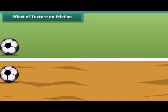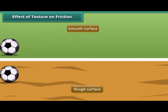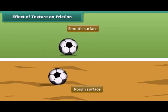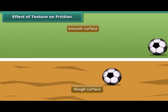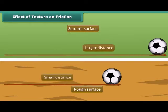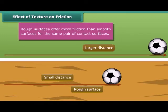A ball is rolled on a smooth surface and another similar ball on a rough surface. Both balls start rolling on different surfaces with the same speed, same force, and at the same time. But the ball rolling on the smooth surface travels a larger distance than the ball rolling on the rough surface. This shows that rough surfaces offer more friction than smooth surfaces, proving that friction depends on the texture of contact surfaces.